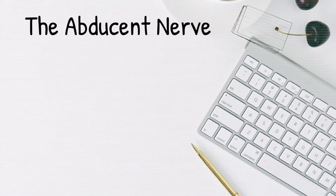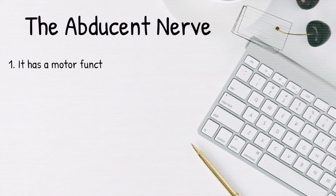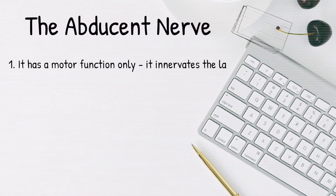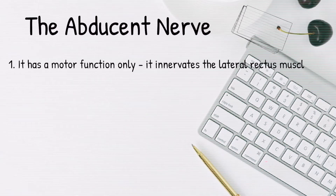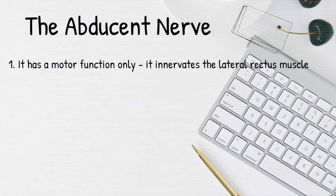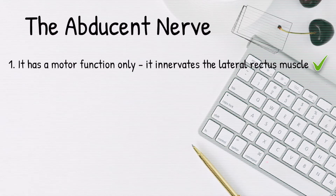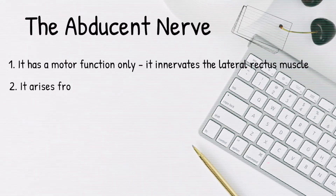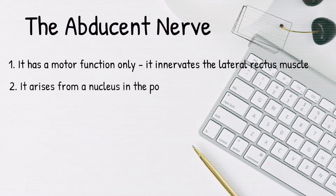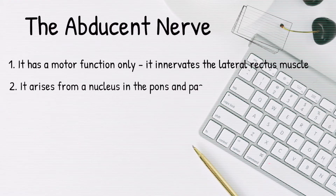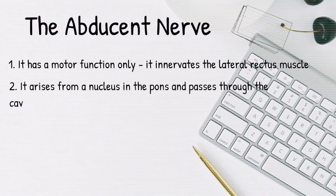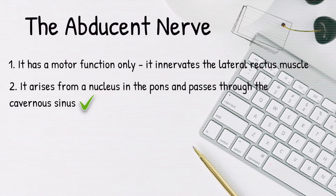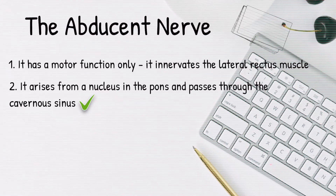Here are some key points about the abducens nerve. It has motor function only. It innervates the lateral rectus muscle, which is responsible for abduction of the eye. It arises from a nucleus in the pons and passes through the cavernous sinus along with the internal carotid artery and a number of other cranial nerves.